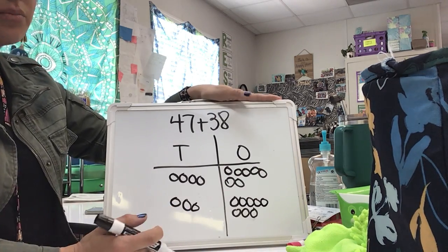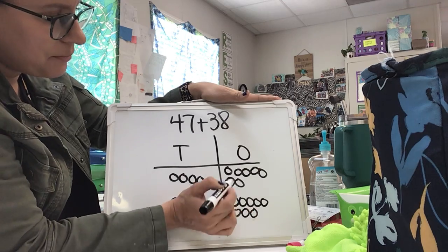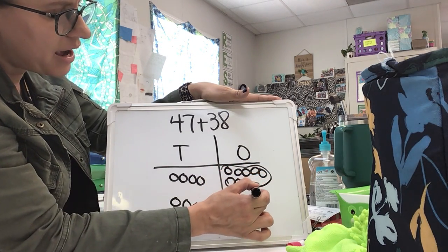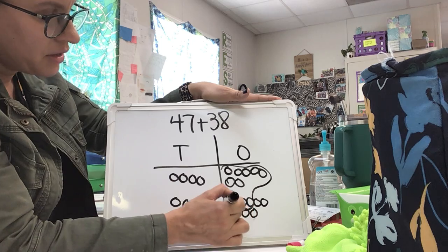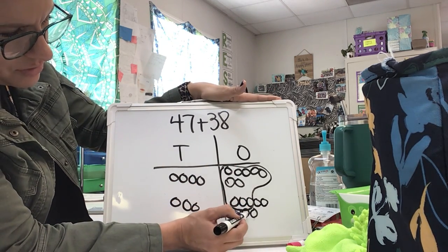So remember if it's 10 or more, I'm going to have to bundle it up. So again, whenever I am bundling these up, I'm drawing a circle around 10 of them. I know I counted 15, so I should have 5 outside of my circle. 1, 2, 3, 4, 5.